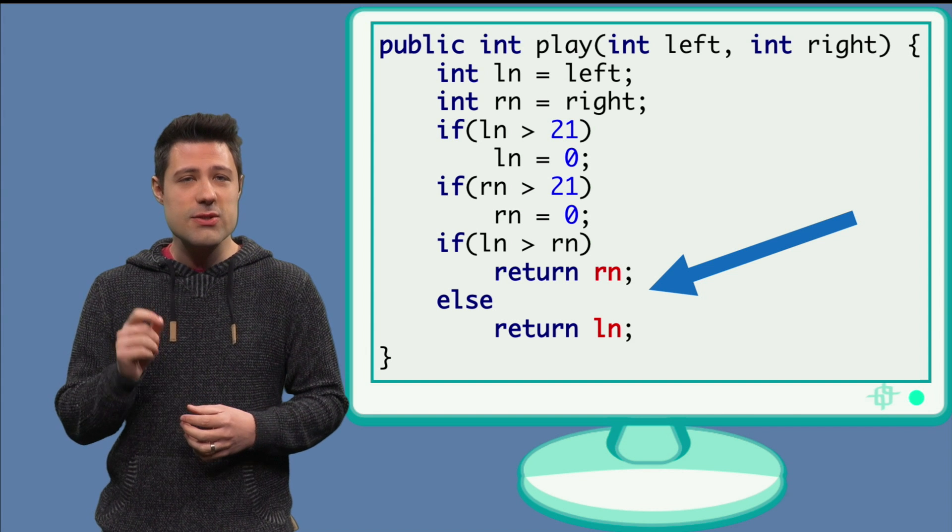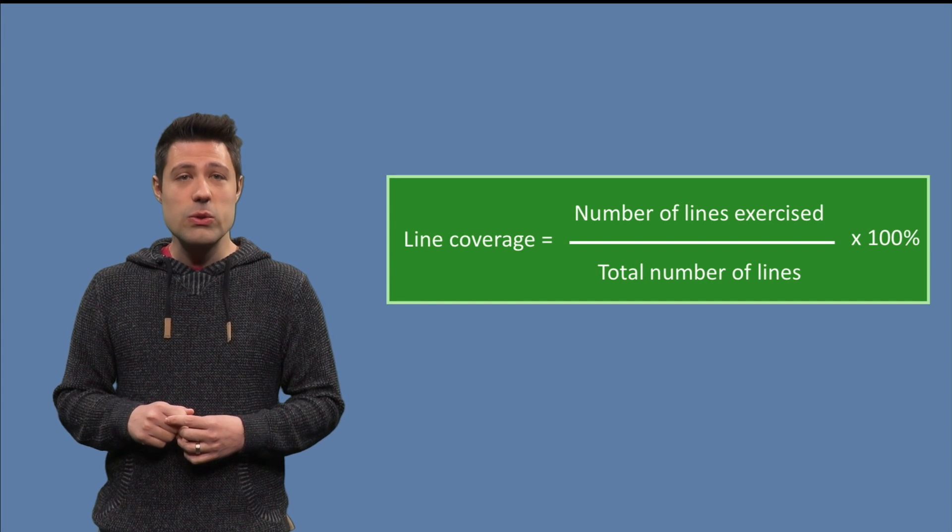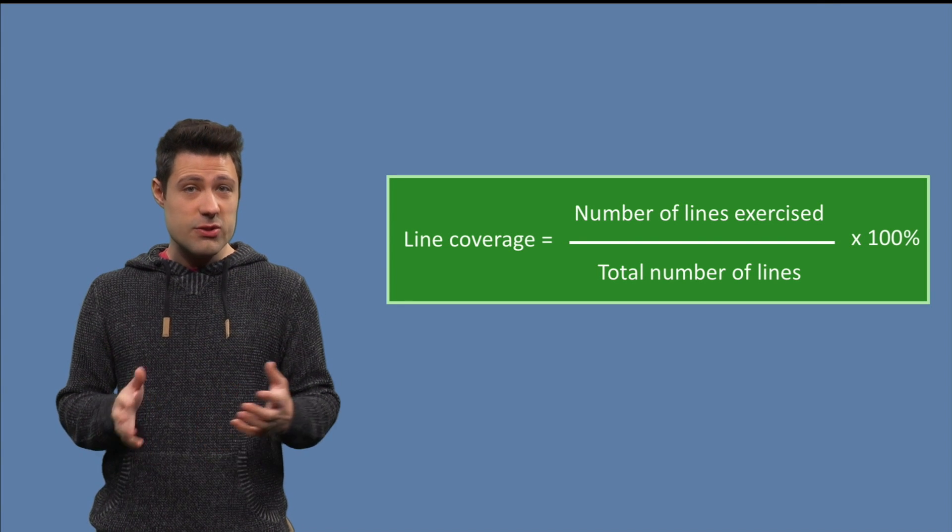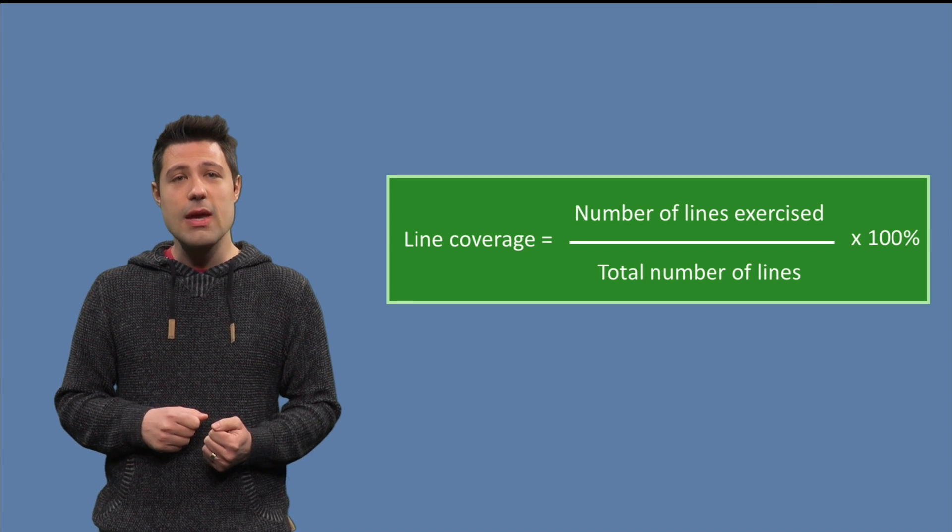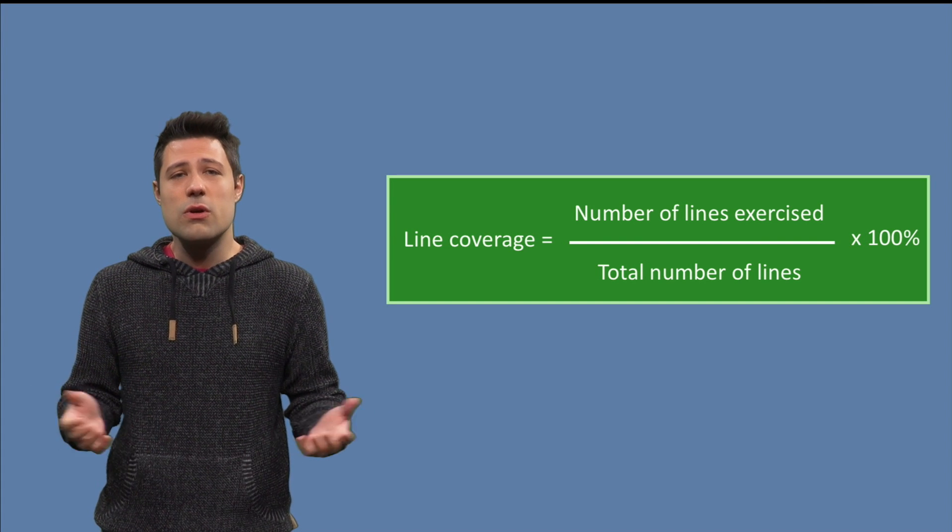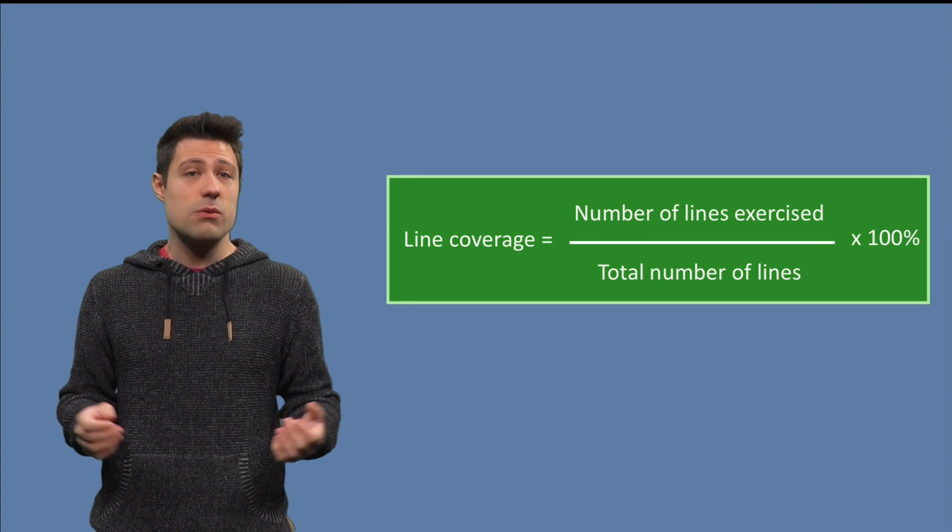Let's just formalize this idea a little bit. To calculate line coverage, we divide the total number of lines that were exercised by at least one test by the total number of lines of code in that class, or method, or whatever other unit we are trying to measure line coverage.